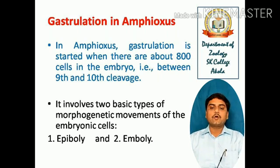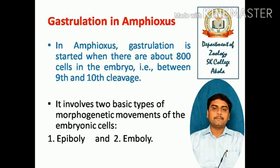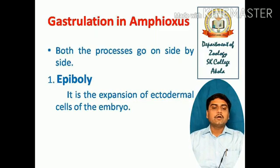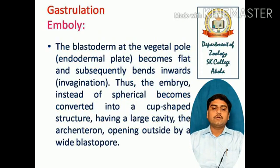Gastrulation involves two basic types of morphogenetic movements of embryonic cells. Number one is epiboly and number two is emboly. Both processes go on side by side. Epiboly is the expansion of ectodermal cells of the embryo. In emboly, the blastoderm at the vegetal pole — the endodermal plate — becomes flat and subsequently bends into invagination.